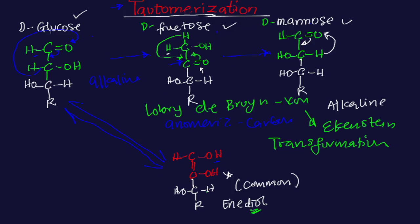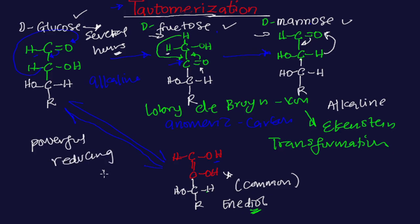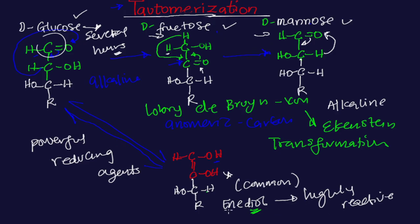Whenever glucose is kept in an alkaline medium for several hours, it is going to undergo isomerization to form D-fructose and also D-mannose — that is the most important point to get here. Whenever we have sugar in alkaline solution, they are powerful reducing agents since they have anomeric carbon atoms. The enediol that is formed is highly reactive and is a common product formed whenever glucose, fructose, and mannose undergo tautomerization.